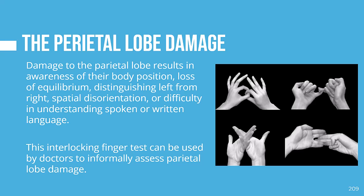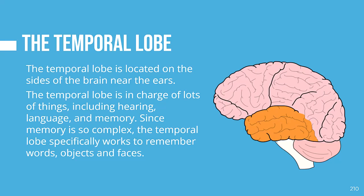To test for parietal lobe damage, physicians can do an interlocking finger test. This photograph shows the test that doctors use to informally assess parietal lobe damage. The examiner directly faces the patient during the presentation and continues to demonstrate each finger movement until the patient feels they have accurately reproduced it. The ability to imitate the four figures — none, some, or all of the time — gives physicians information on whether more tests are needed to evaluate the patient.